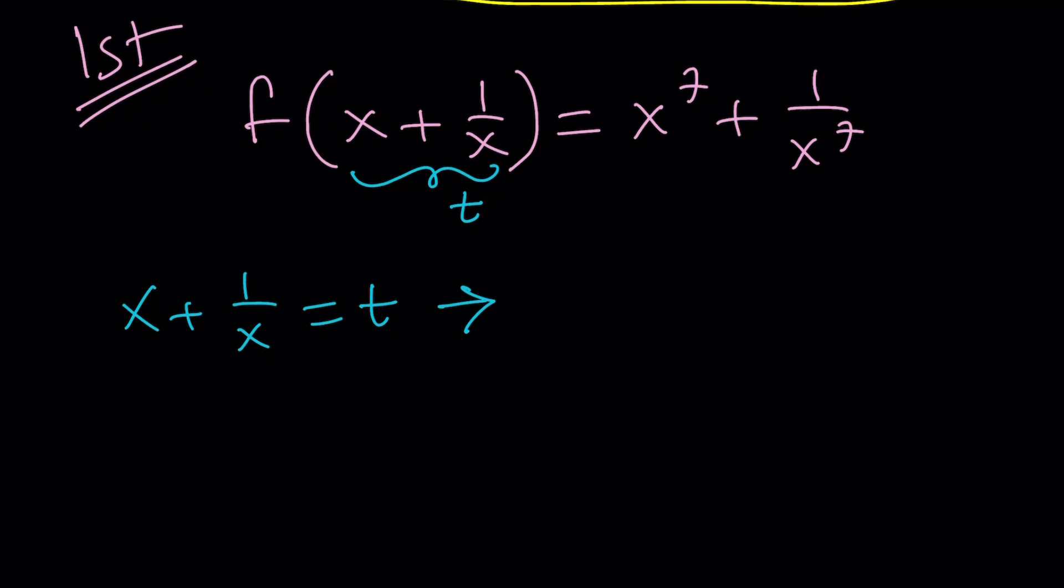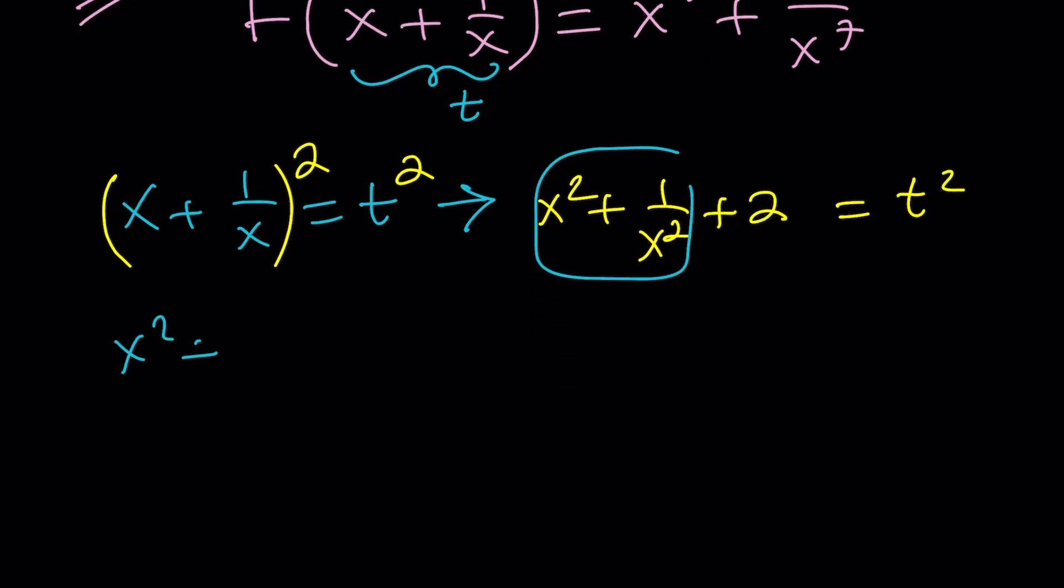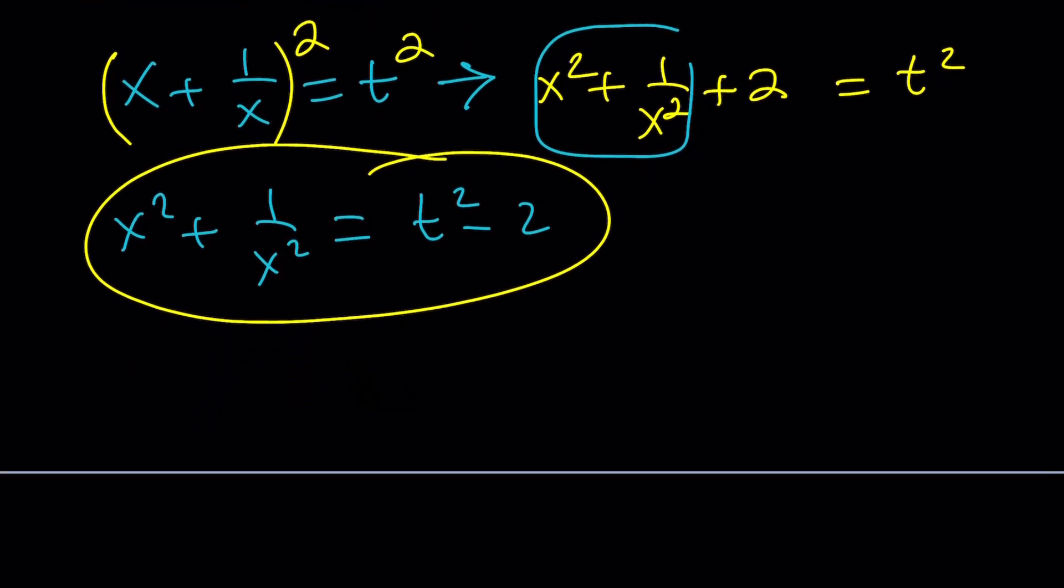I have x plus 1 over x, which is a special expression. If you're dealing with math competitions, either coaching, teaching, or studying or preparing for, you should definitely know these tricks. This is very common. So I'm going to square both sides. That's going to give me x squared plus 1 over x squared plus 2 is equal to t squared. From here, my goal is to solve for this. Let's isolate it. x squared plus 1 over x squared equals t squared minus 2.